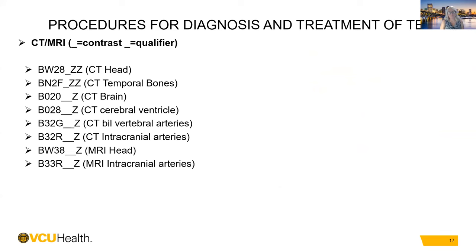Procedures for diagnosis and treatment of TBI: the most common are CT and MRI. Common imaging procedure codes include CT of the head, CT of the temporal bones, CT of the brain, CT of the cerebral ventricle, CT bilateral vertebral arteries, and CT of intracranial arteries. MRI of the head and MRI of intracranial arteries are also used. Some codes have one blank for the contrast qualifier — no contrast, yes contrast, enhanced, or unenhanced.